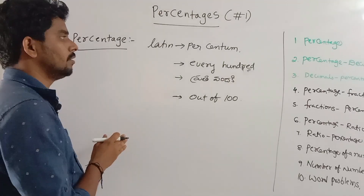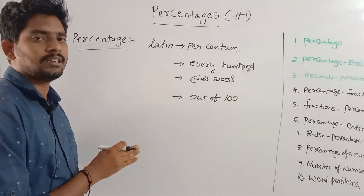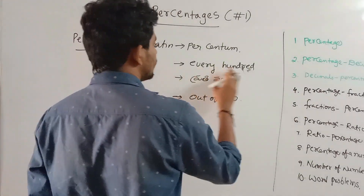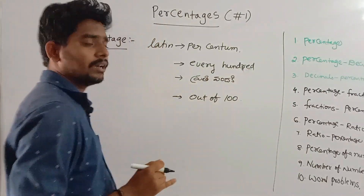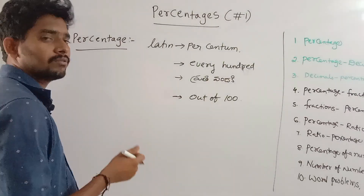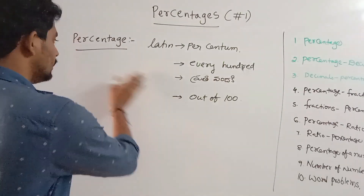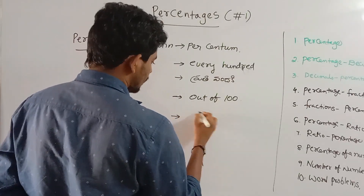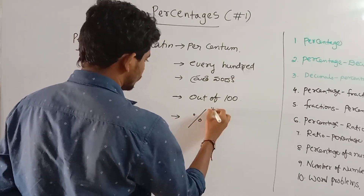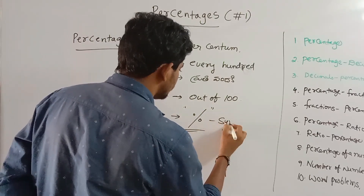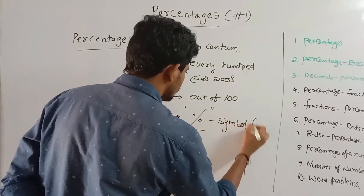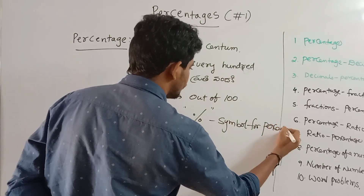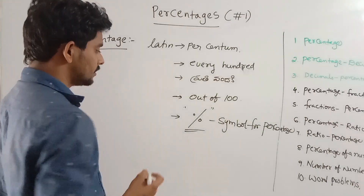Percentum is a Latin term meaning out of hundred — 100% means out of hundred. This is the symbol for percentage.